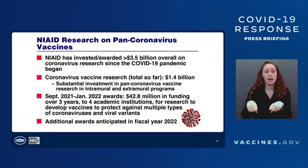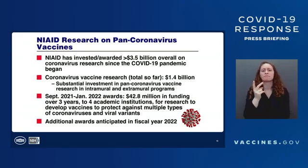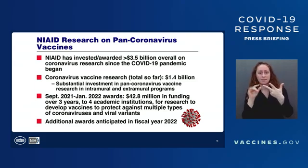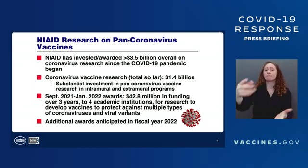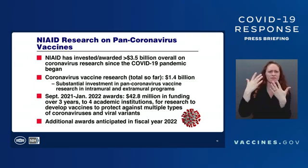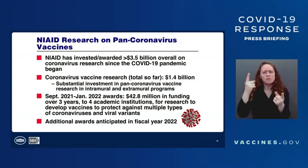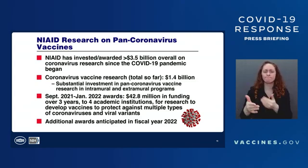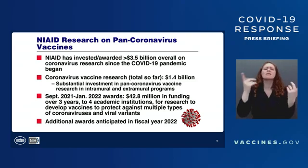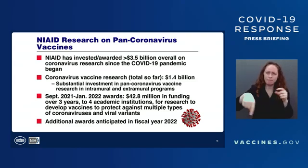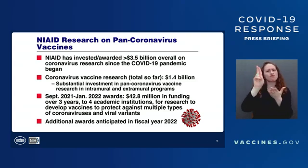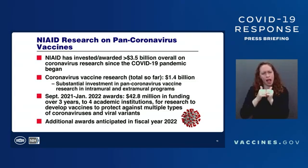The NIH, particularly NIAID, has invested a little bit more than $3 billion overall on coronavirus research since the pandemic began. A subset of that is coronavirus vaccine research — thus far about $1.5 billion — with investments in basic and clinical biomedical research, including recent awards of about $43 million to four academic institutions to do specific research to develop these types of vaccines. Already, there have been results from funding that has been ongoing over the past couple of years.